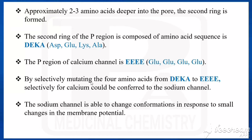By selectively mutating the four amino acids from D-E-K-A to 4E, selectivity for calcium could be conferred to the sodium channel — meaning calcium ions can enter the sodium channel after this mutation.